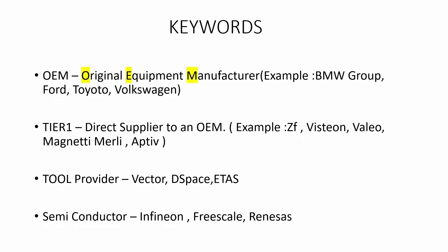Examples of OEMs include BMW Group, Ford, Toyota, and Volkswagen. Tier 1 refers to direct suppliers to an OEM — companies directly supplying hardware to OEMs. Examples of Tier 1 companies include ZF, Visteon, Valeo, Magneti Marelli, and Aptiv. Tool providers include Vector, dSPACE, and ETAS — these companies provide tools for AUTOSAR software component development.